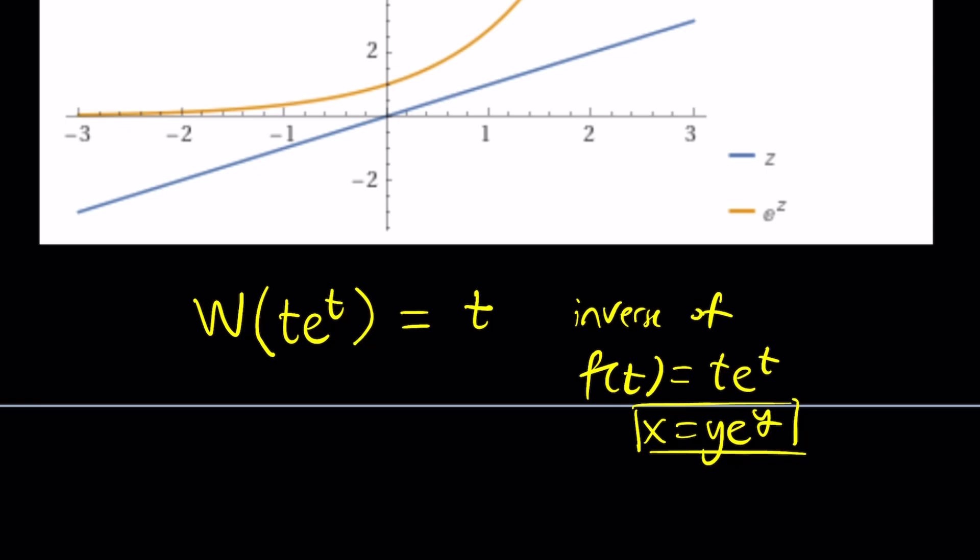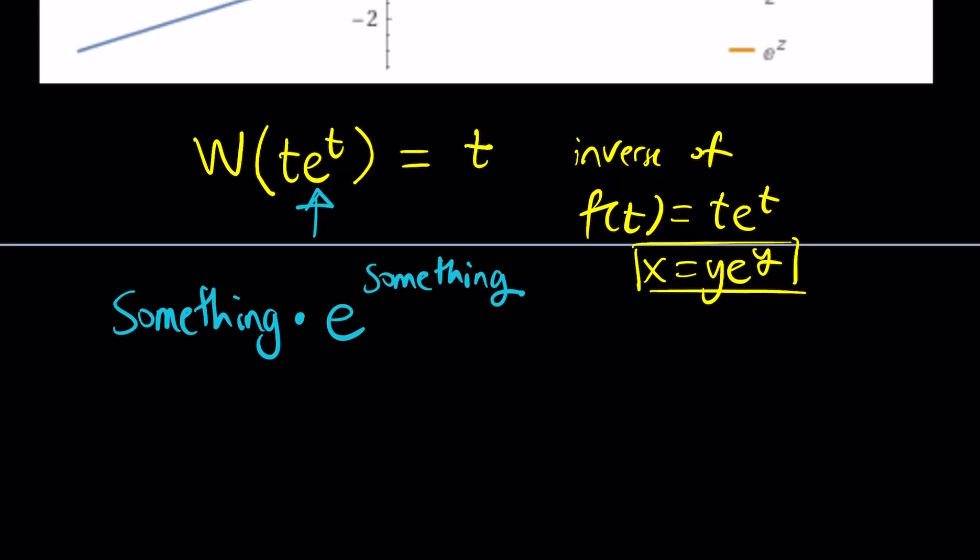The problem is, though, those are going to be the real values. We do need something like this. We do need a form for our equation that looks like this. It is something times e to the power something, and those somethings are the same. Make sense? They're not random.